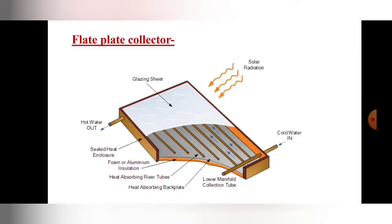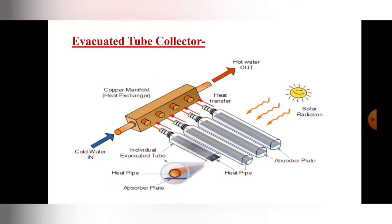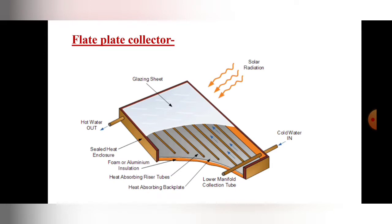Before studying flat plate collectors and evacuated tube collectors in detail, let's get familiar with them. Here I have shown a diagram. What you are seeing in that diagram is a flat plate collector — it looks like a flat plate, that's why it is called a flat plate collector. The components visible are: solar radiation coming from the sun, glazing sheets on the top to avoid heat loss, cold water supplied from one side, and hot water output from the other side.